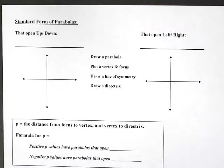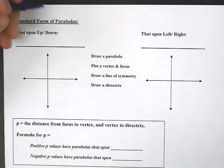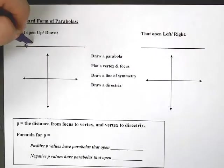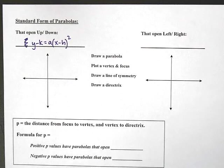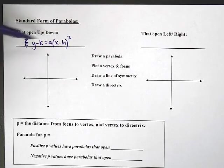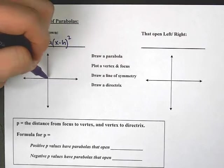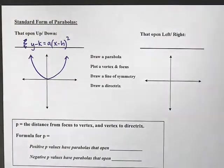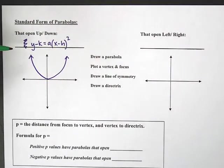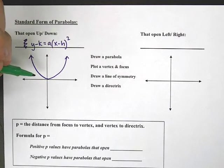Now we need to rewrite our standard form. If we're opening up or down, that means x is going to be squared, so we're going to have: y minus k equals a times (x minus h) squared. We would get it in standard form, draw in our parabola — let's say it's going up and down. And here's where we put our conic spin on it. Our conic spin is that there are two other things we need to put on it: our focus and our directrix.